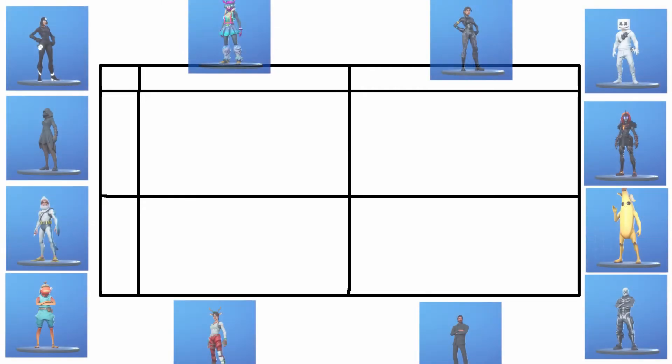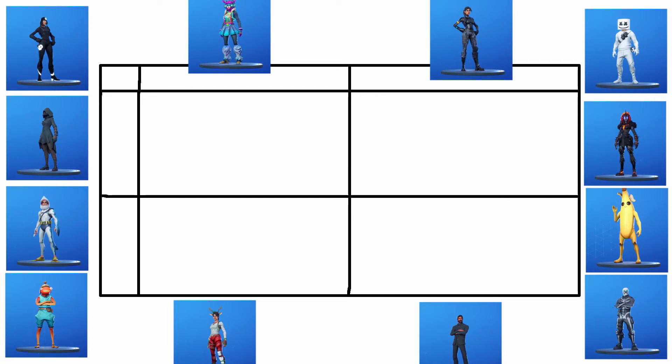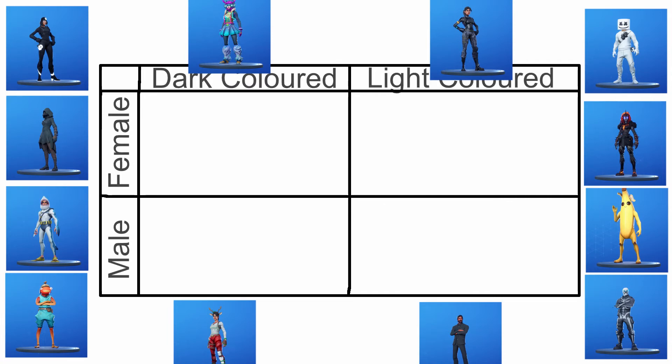So let's look at our Carroll diagram. Slightly different from a Venn diagram, this gives us choices of a yes or a no answer for things. By popular demand from Aidan, I have tried to incorporate a little Fortnite along the way, so I need to sort my characters around the edge into the right boxes.